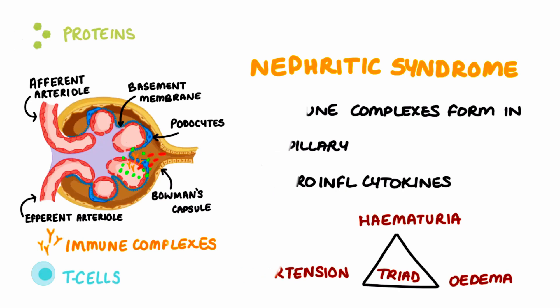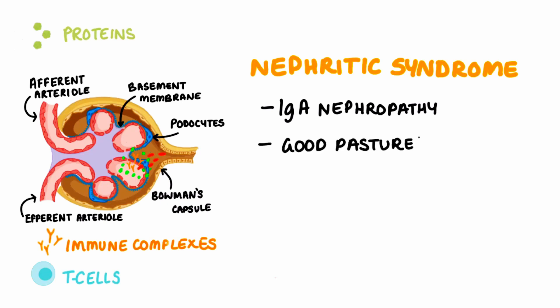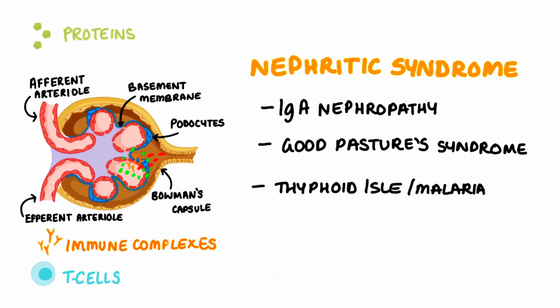The causes of nephritic syndrome include IgA nephropathy, which is when IgA deposits build up. It can often occur after a recurrent upper respiratory tract infection and is more commonly present in younger males. Goodpasture syndrome is when there are antibodies that attack the glomerular basement membrane, which then escalates into an inflammatory reaction. Other causes include typhoid, malaria, and SLE.